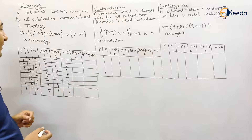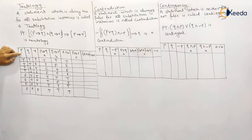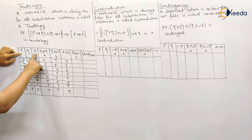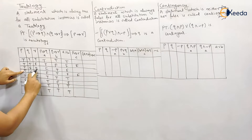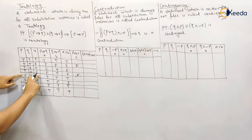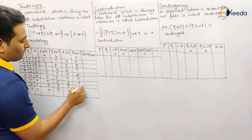Next, p implies r. We check for T→F, because it is an implies. Here it is false; here it is also false. That is it — the rest of everything is true.